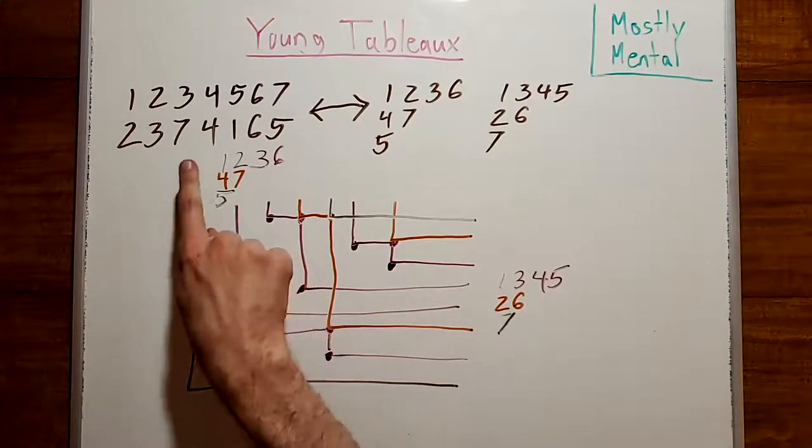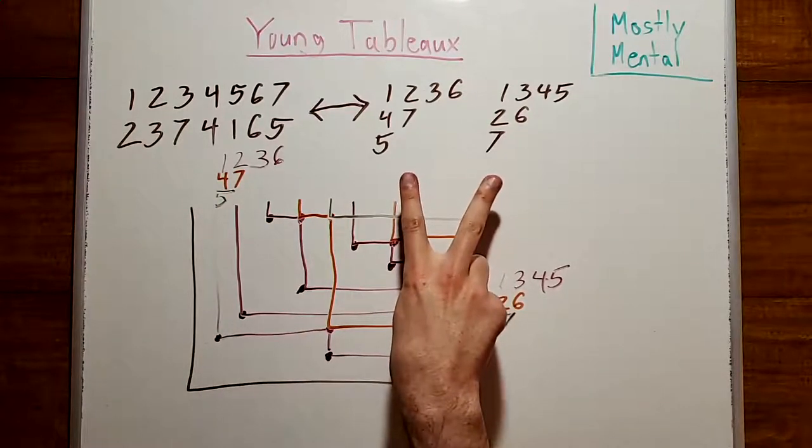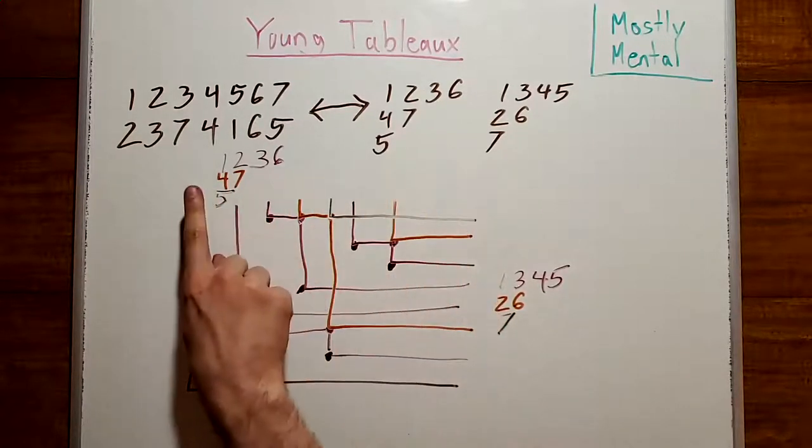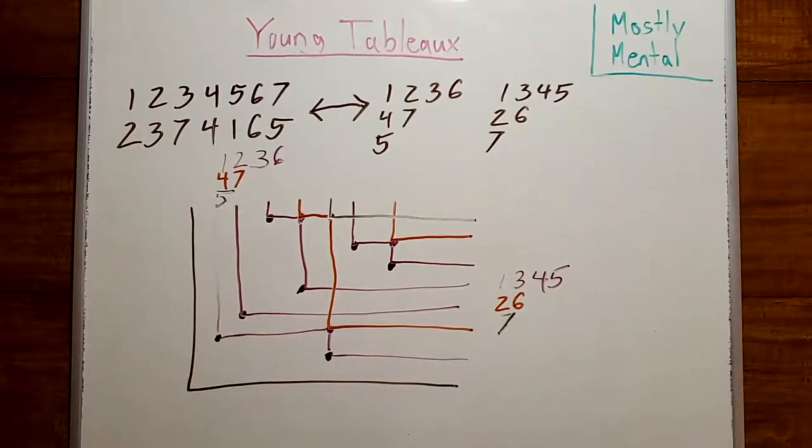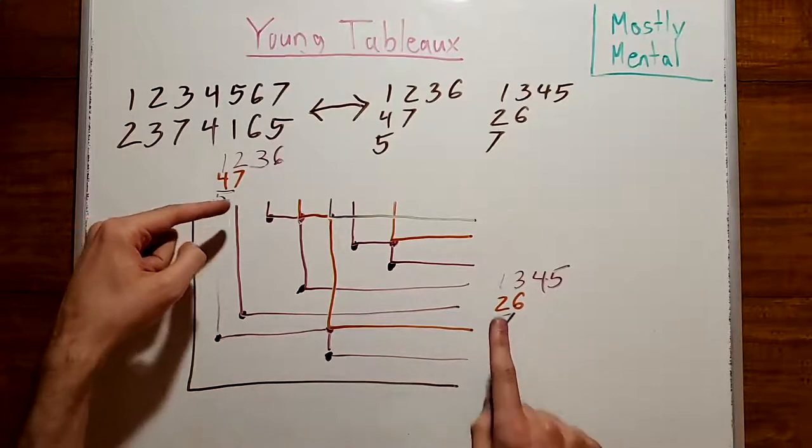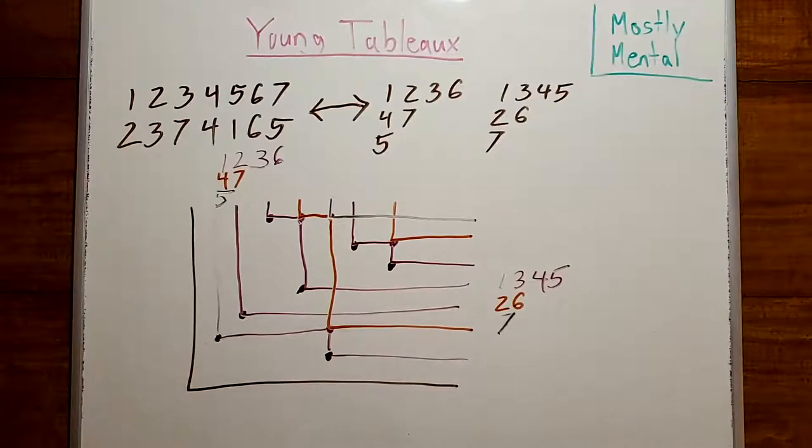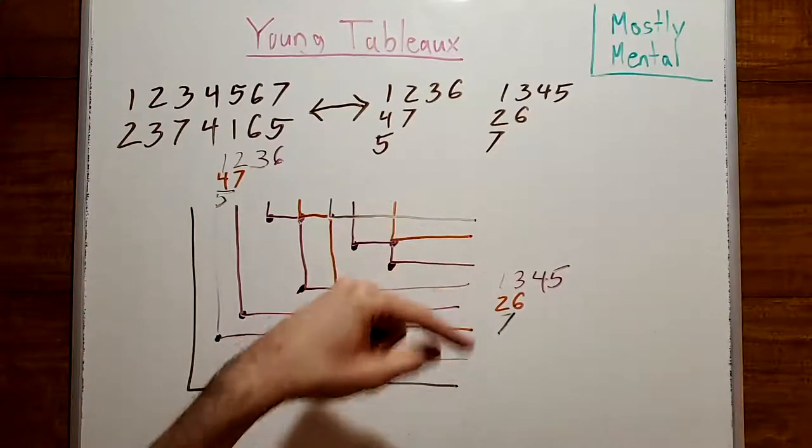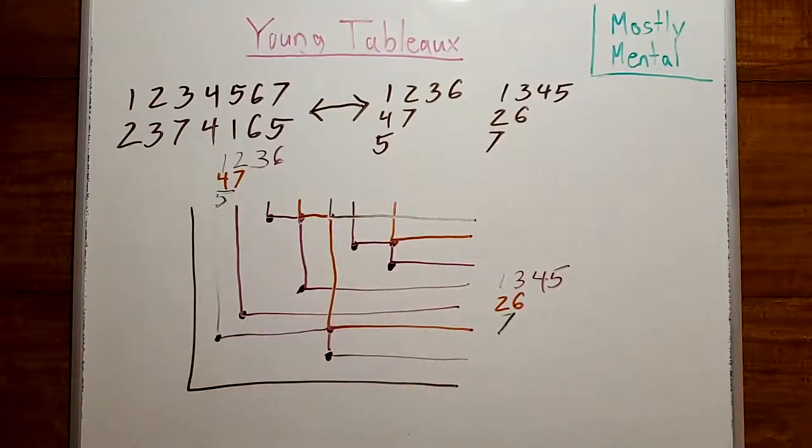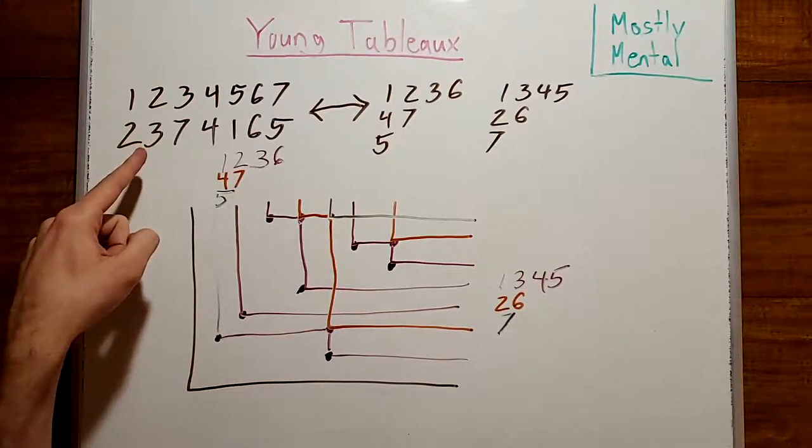Now, we've outlined how to take a permutation and turn it into a pair of tableaux, but we can also go in the other direction. All we have to do is reverse the procedure. So we start with the last row of each tableau, and draw the lines inward until they intersect. And then we repeat one row at a time, going upward, until we end up with our collection of points. And then reading off the coordinates gives us back our permutation.